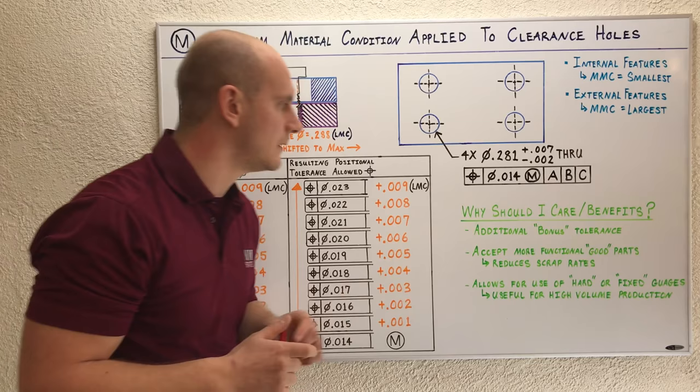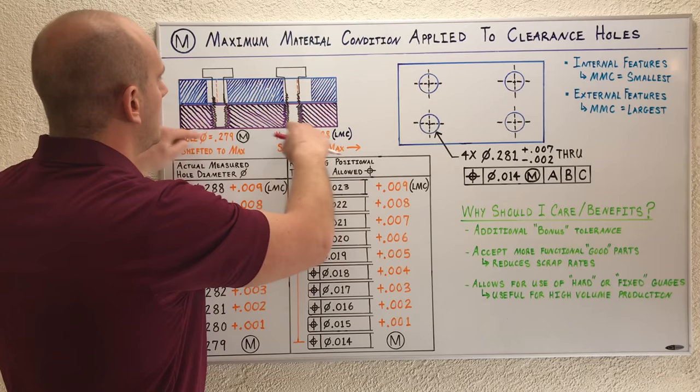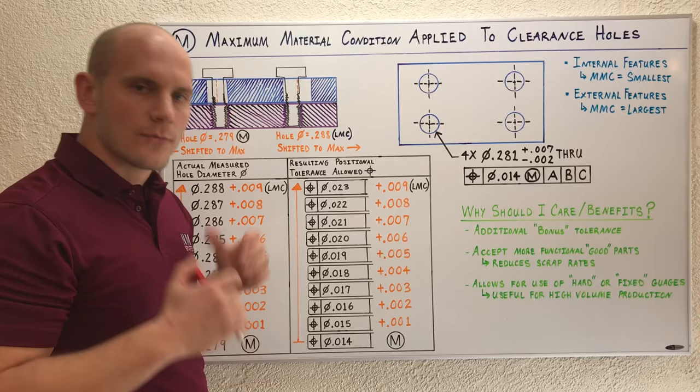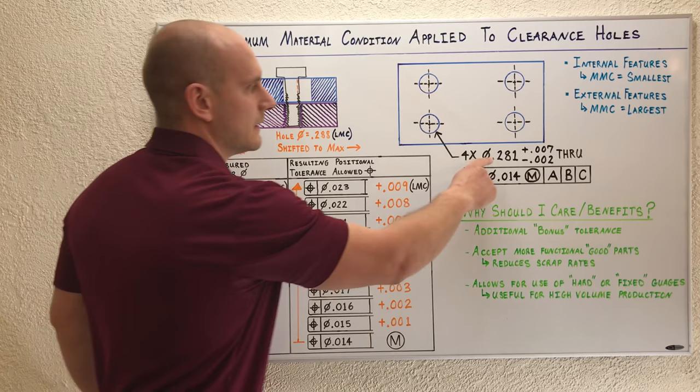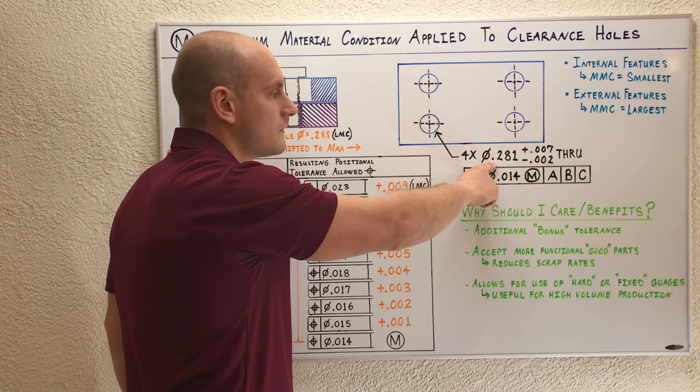All right everybody, that's MMC. It's a symbol. You invoke a relationship between the actual measured hole diameter and the resulting positional tolerance allowed while still maintaining proper fit and assembly, and you get all these added benefits. So go ahead and start using MMC with your clearance holes. Like I mentioned before, if you're interested in knowing how to calculate this critical initial hole diameter for clearance holes, I'm going to cover that in my video coming up very soon. Thank you everybody for watching, and that's Straight to the Point.